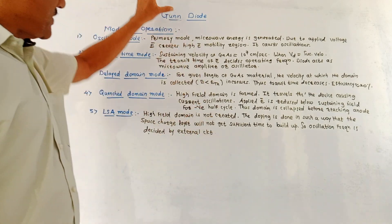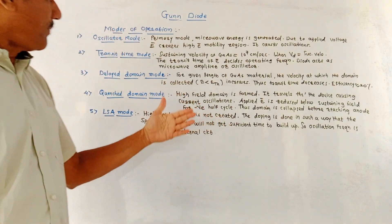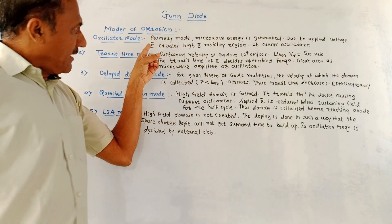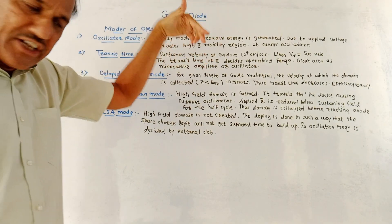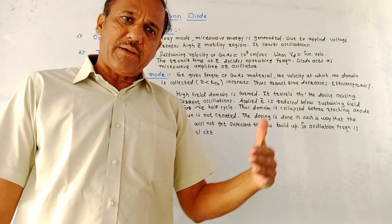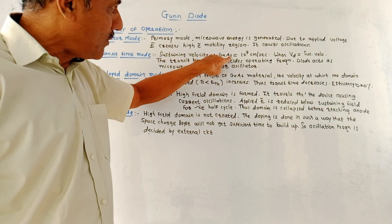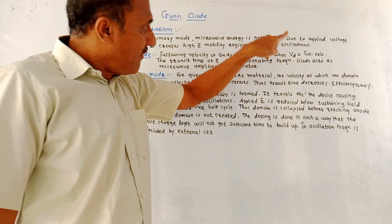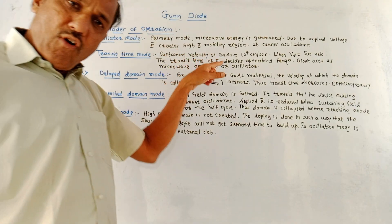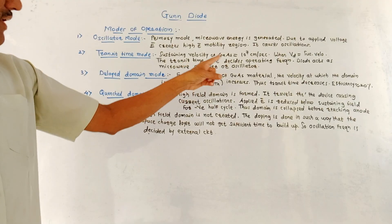Now we discuss the different modes of operation of a gun diode. First is the oscillator mode — this is the primary mode of operation. Microwave energy is generated; when voltage is applied, the electric field creates high electron mobility regions and oscillations begin. Second is the transit time mode. The sustaining velocity of gallium arsenide is 10⁷ cm/s. When the drift velocity equals the sustaining velocity, the transit time of electron motion decides the operating frequency, and the diode acts as a microwave amplifier or oscillator.